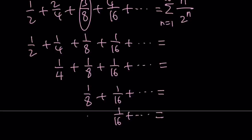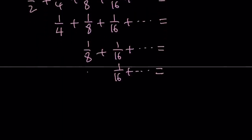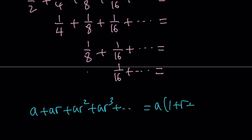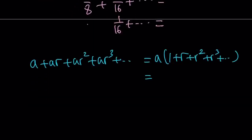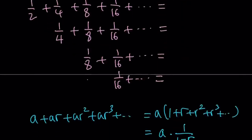To quickly recall how we do the geometric series: if you have a plus ar plus ar squared plus ar cubed dot dot dot, this can be written as a times (1 plus r plus r squared plus r cubed dot dot dot). As long as r is between negative one and one, this converges and we can write it as a over 1 minus r, where a is the first term and r is the common ratio. So the first series has first term 1 half, divided by 1 minus r, where r is 1 half, giving us 1 half divided by 1 minus 1 half.